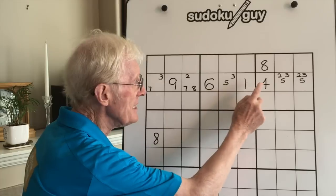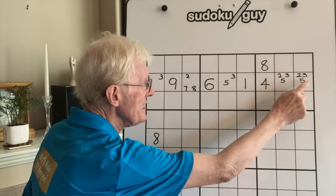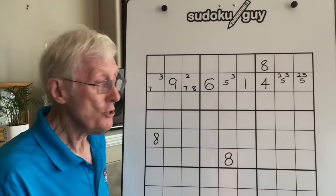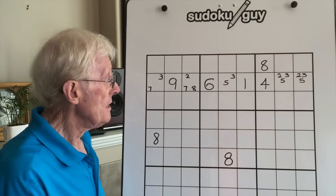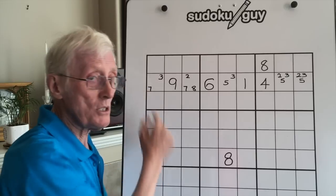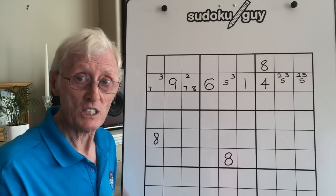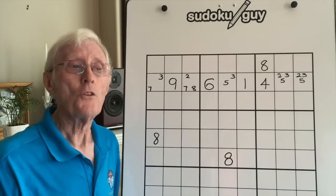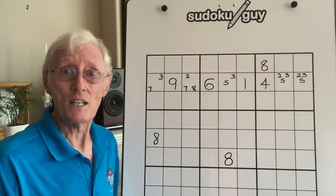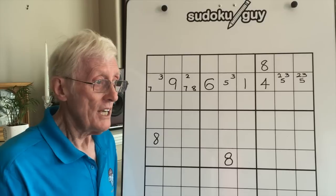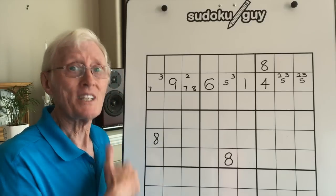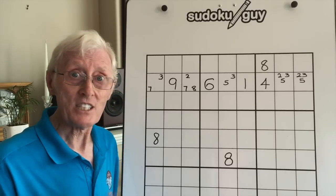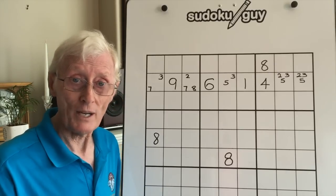There were three cells with three numbers — 2, 3, and 5 — which meant that you could solve some of those numbers. The more techniques you know, the easier it becomes to solve a puzzle, because if you miss something you can use another technique to continue on and solve the puzzle.